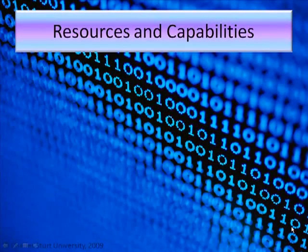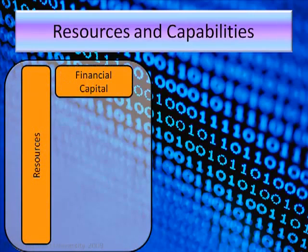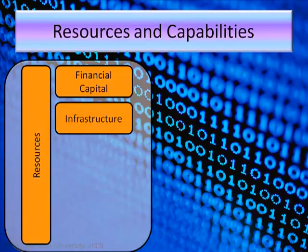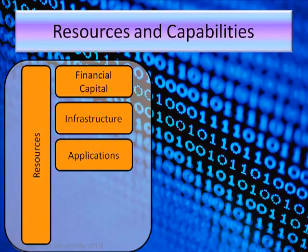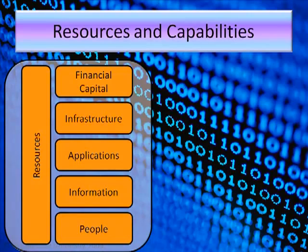Here's a more graphical view on resources and capabilities. Let's have a look at resources first. What type of resources do we have? We've got financial capital — money — we need budgets to invest in our services. We've got infrastructure like mainframes, servers, desktops and network components. We've got applications like business applications and office applications. We've got information — we're dealing with enormous amounts of data nowadays that we need to manage. And we've got people actually doing the work, people being the resources.